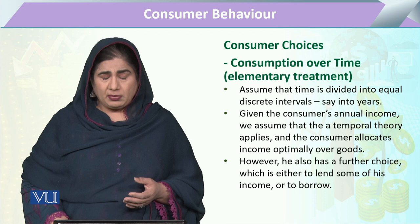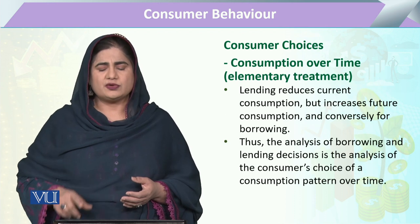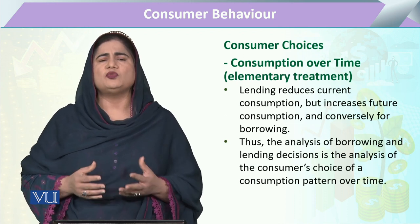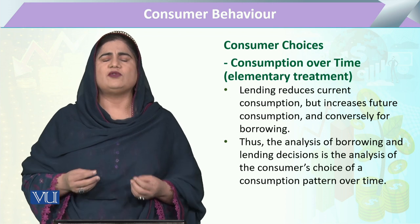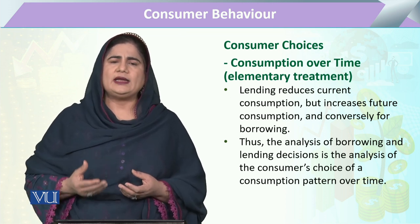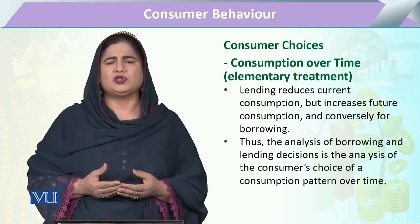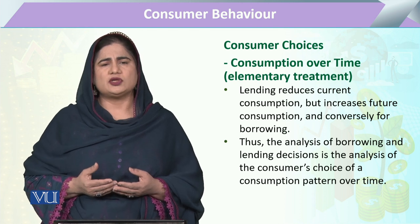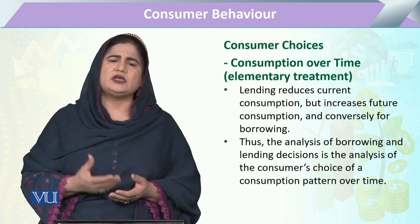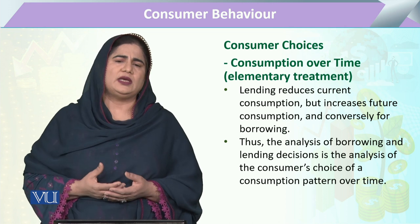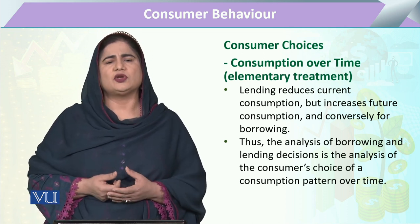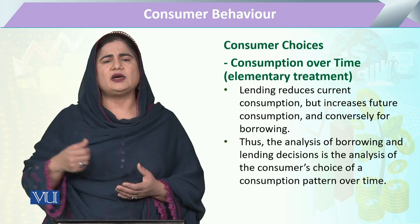When we talk about allocation of resources, we know that the consumer's resources are only the income of the consumer. To attain this consumption, he has to allocate resources among commodities, dealing with a commodity bundle of consumption over that time.